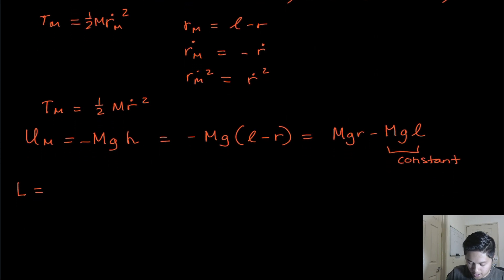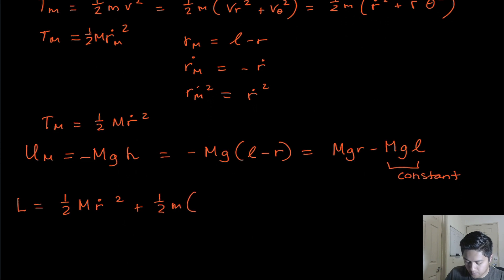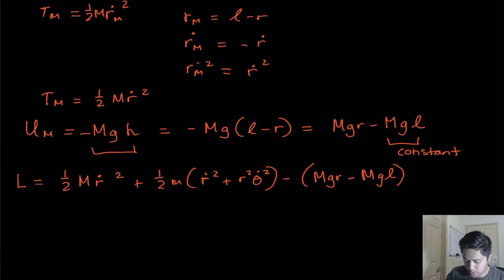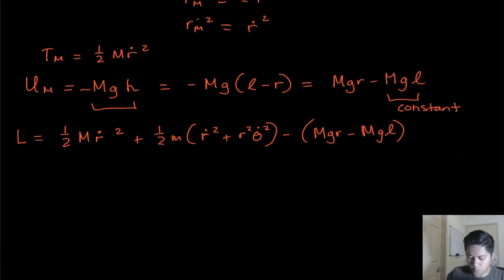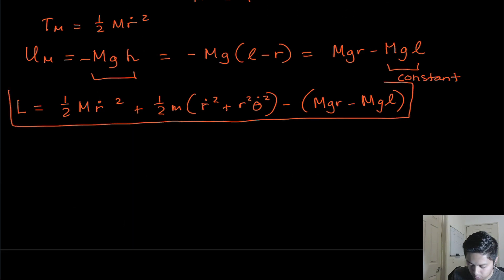Putting it all together, the Lagrangian L is: one half M·r-dot² plus one half m·(r-dot² + r²θ-dot²), minus the potential energy term (Mgr − Mgl). This is the total Lagrangian for our joint system.